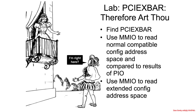Now the lab: go ahead and find your PCIe XBAR, access the extended configuration address space via memory-mapped IO, then access the compatible configuration address space — the first 256 bytes — via memory-mapped IO, and compare the results to what you see with port IO.